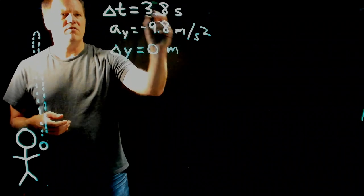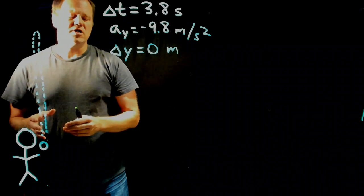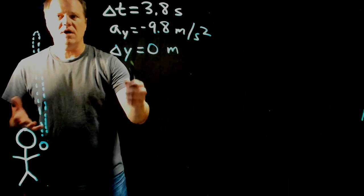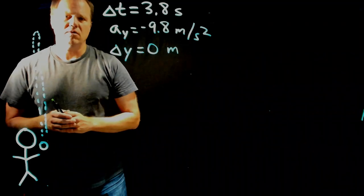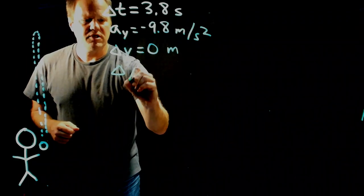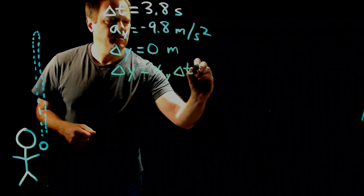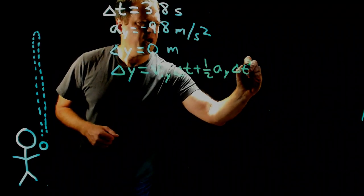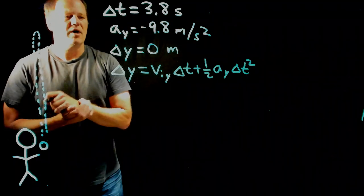Now I have three pieces of information. I need to find an equation that relates these three variables to the unknown of interest, which is the initial velocity. You might pause the video, look at the list of constant acceleration kinematics equations, and find one that includes these three knowns plus the one unknown — initial velocity. Here's one that will work: displacement equals the initial velocity times the time interval plus one-half times acceleration times time squared. Your textbook might look slightly different, but it's essentially the same equation.